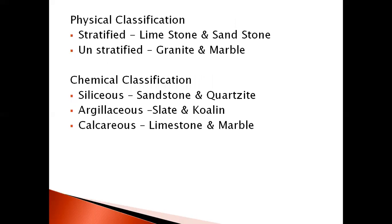The next classification is physical classification. In physical classification we have two types: stratified rock and unstratified rock. In stratified rock, if we look at the rock we can see horizontal lines or layers. These stratified rocks most probably come from sedimentary rocks, since sedimentary rocks are formed layer by layer. Examples of stratified rock are limestone and sandstone.